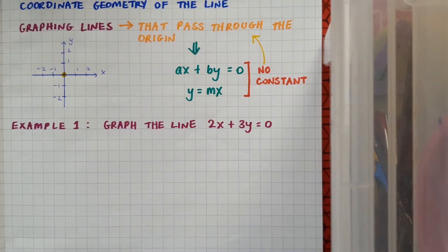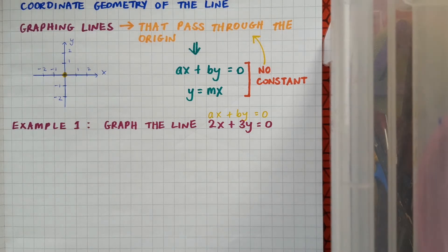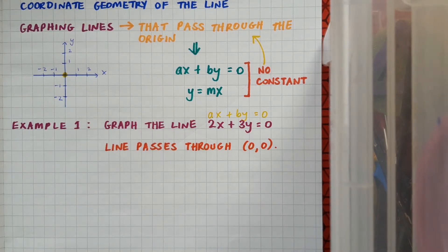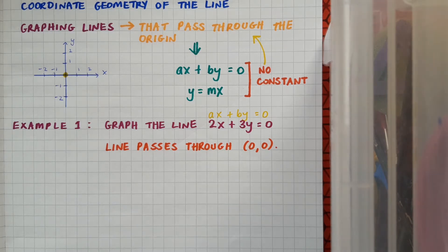Let's look at an example. We want to graph the line 2x plus 3y equals zero. The first thing to note is that the line is in the format ax plus by equals zero, which gives us a big hint about how the line looks. We know straight away, just from the format, that the line must pass through the point (0, 0). And now I need to find a second point.